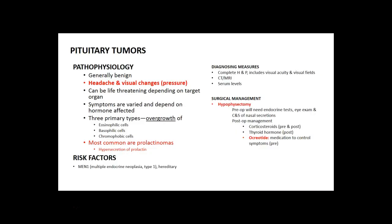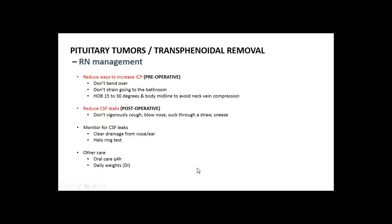Most problems are going to be a result of a tumor — they're usually benign. Signs and symptoms include headache, visual changes, and a sense of pressure. If somebody has a tumor, it's going to have to be removed through a procedure called hypophysectomy. Octreotide is a medication used to control a lot of the symptoms ahead of time. From a nursing standpoint, it's going to be more about how you educate the patient before and after surgery.